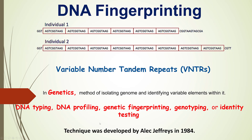This technique was developed by Alec Jeffreys in 1984. He used satellite DNA called VNTRs as a probe in this technique because these VNTRs showed the highest level of polymorphism.